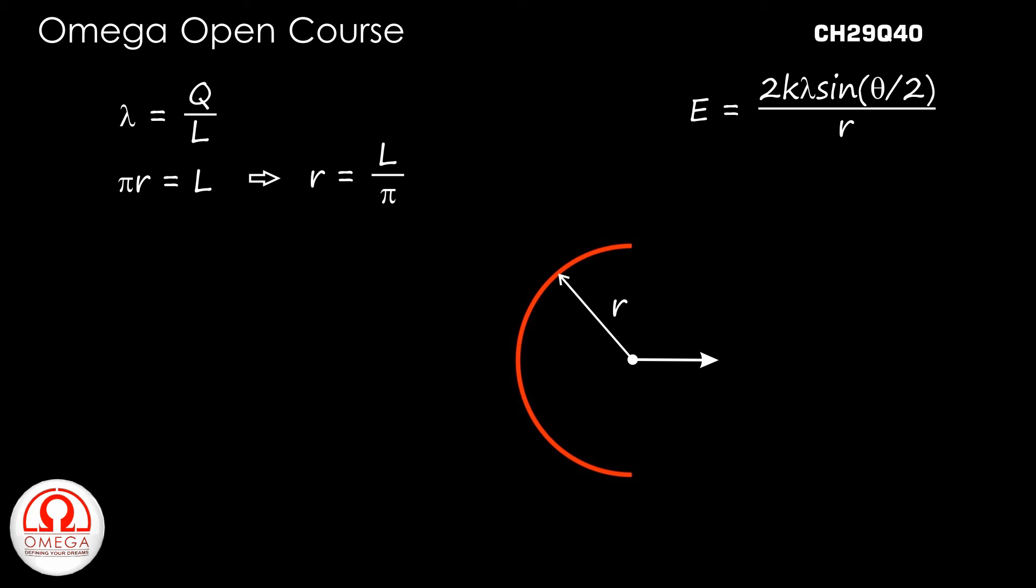Since the semicircle subtends angle 180 degrees at its center, the electric field at the center is 2k Q by L into sin 90 degrees divided by L by pi.